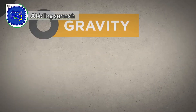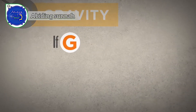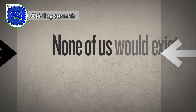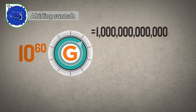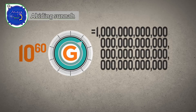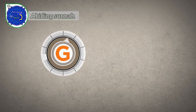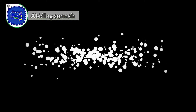Consider gravity, for example. The force of gravity is determined by the gravitational constant. If this constant varied by just one in 10 to the 60th parts, none of us would exist. To understand how exceedingly narrow this life-permitting range is, imagine a dial divided into 10 to the 60th increments — compare it to the number of cells in your body, or the number of seconds since time began. If the gravitational constant had been out of tune by just one of these infinitesimally small increments, the universe would either have expanded and thinned out so rapidly that no stars could form, or it would have collapsed back on itself.